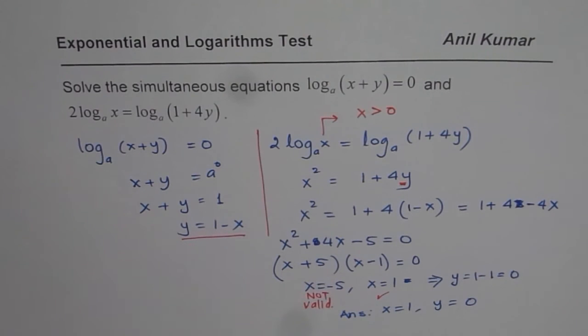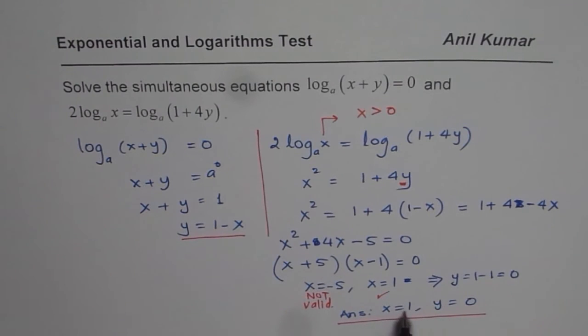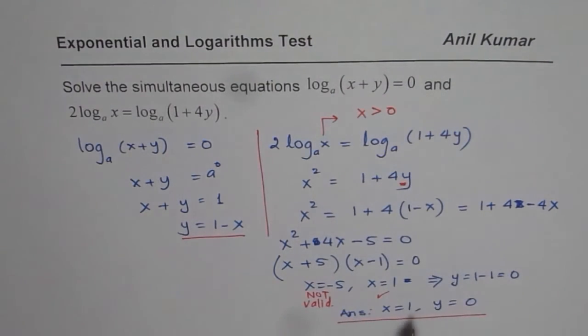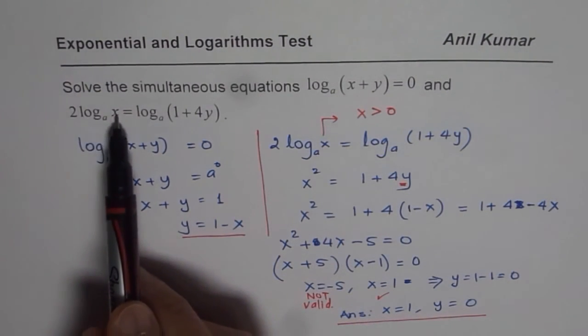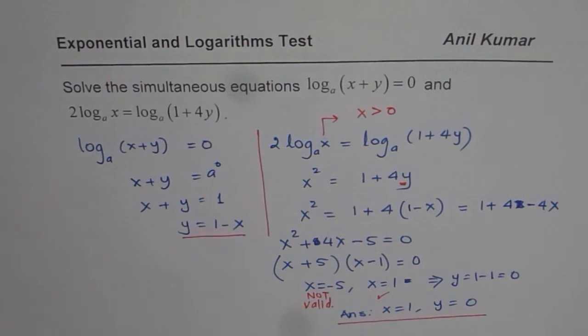So whenever you get a solution in quadratic equations, you should also test it out. So if I substitute x as 1, y as 0, so log of 1 will be 0, that is correct. Here also, it will be 1 and this is 0, so this is 1. So that also works, right?